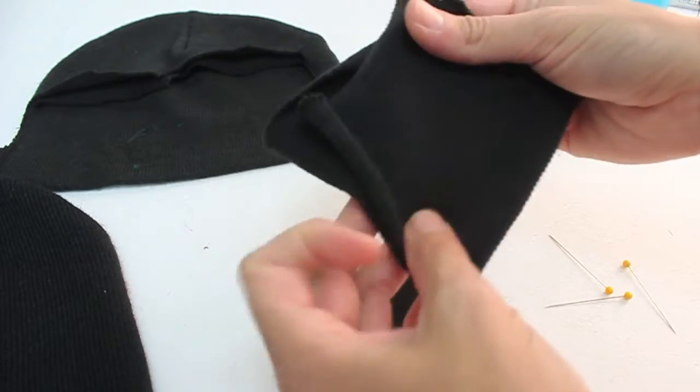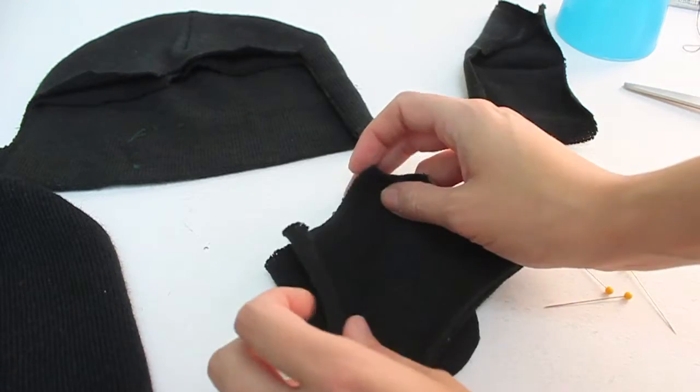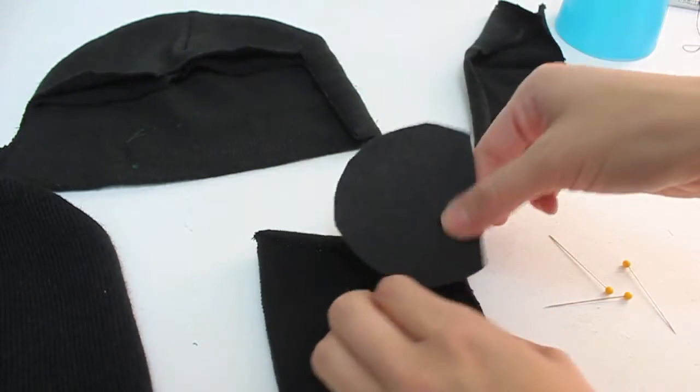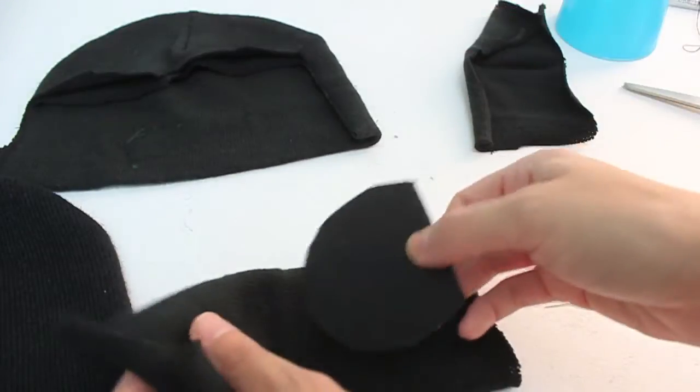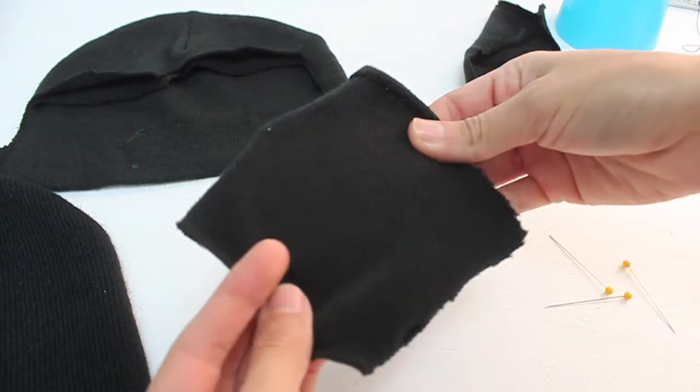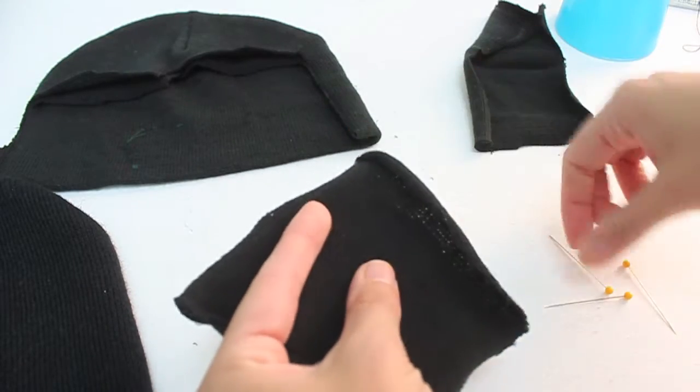But what I'm actually going to be doing is flipping my fabric inside out. And then I'm going to take my felt and stick it inside. The reason I'm leaving it inside is when I'm sewing, I want it to be able to create the form all around it.